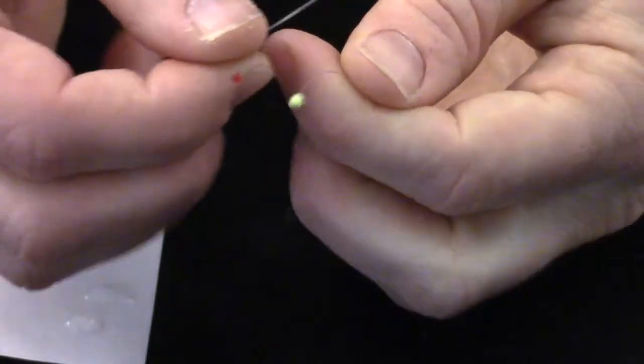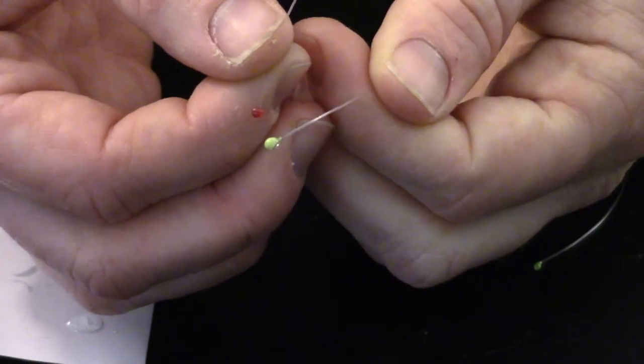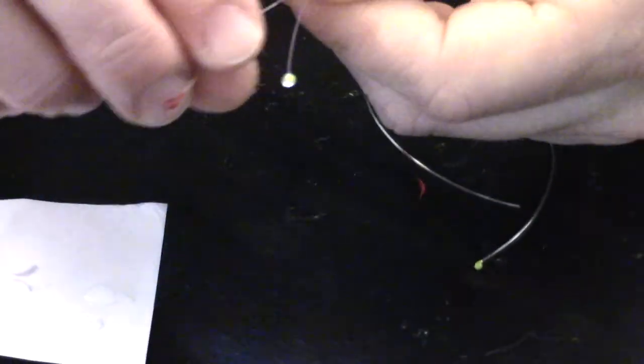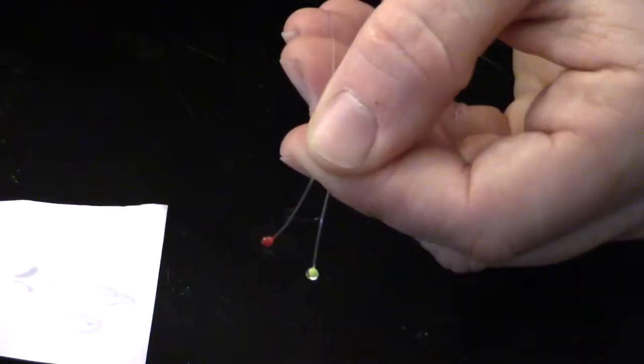And these take a little longer to cure than the thin formula. Look at the difference here between the two. One is a smaller bulb at the end. The other one's a little thicker. So, that's it. That's a monofilament eye. They're really simple to make.